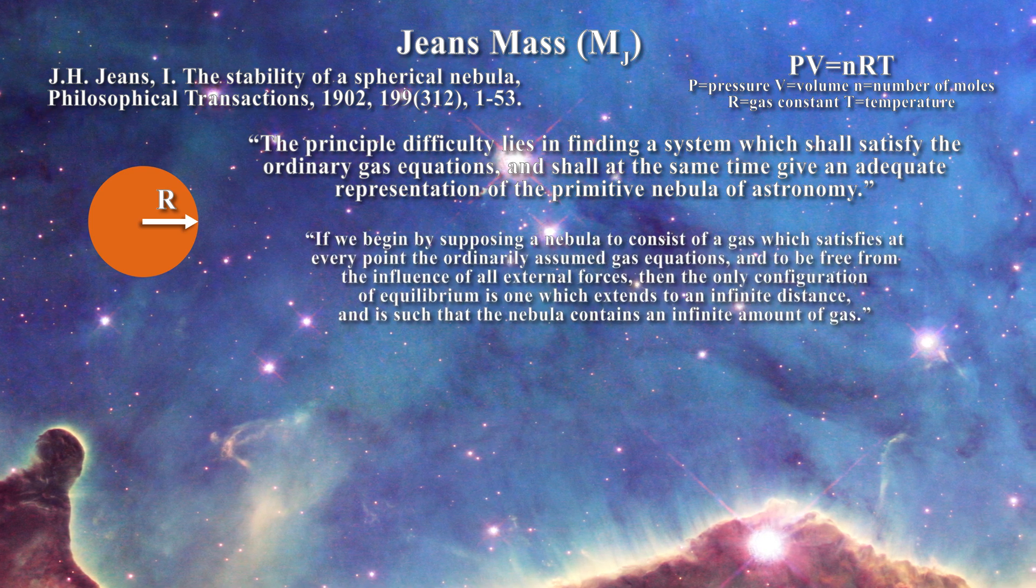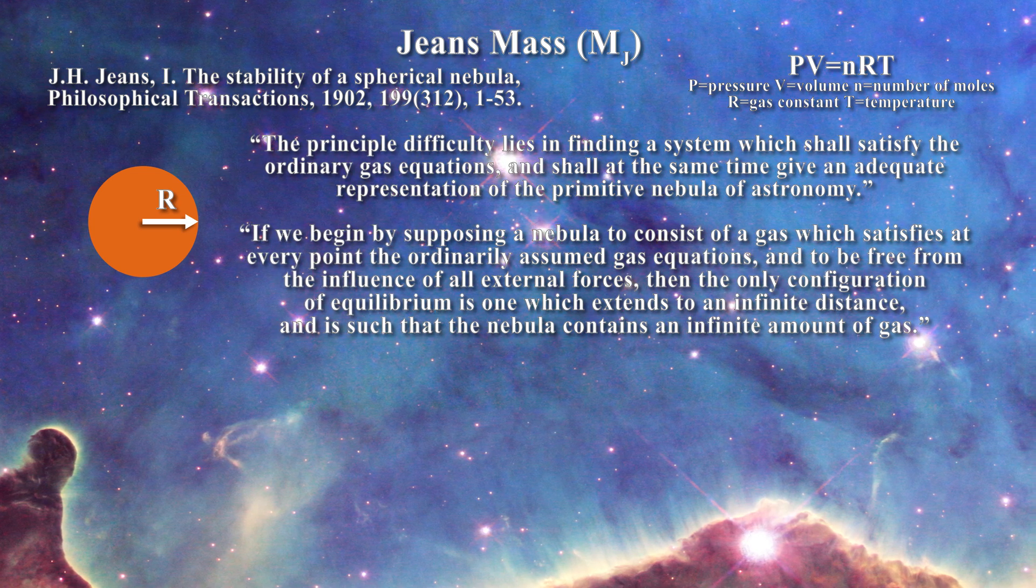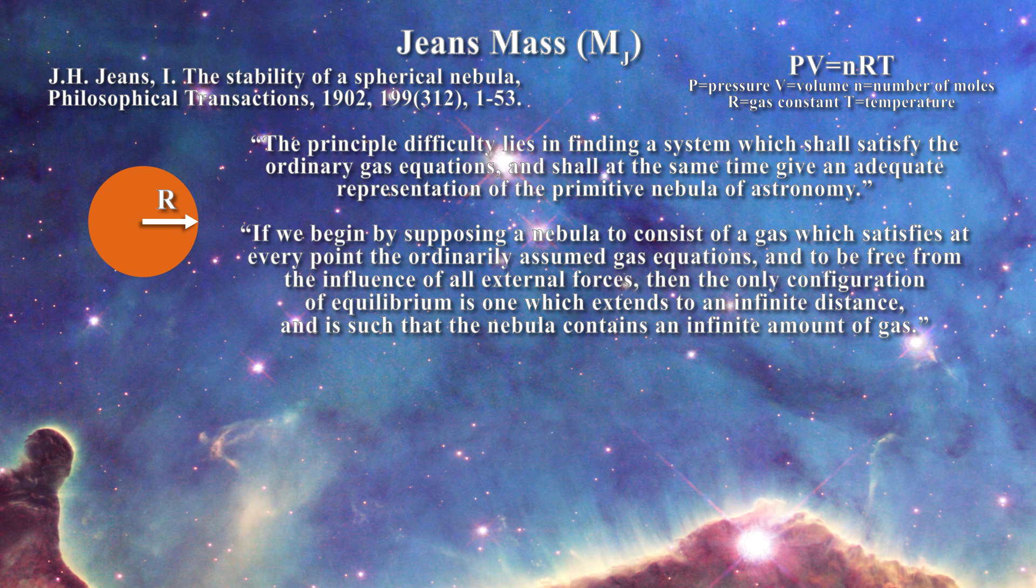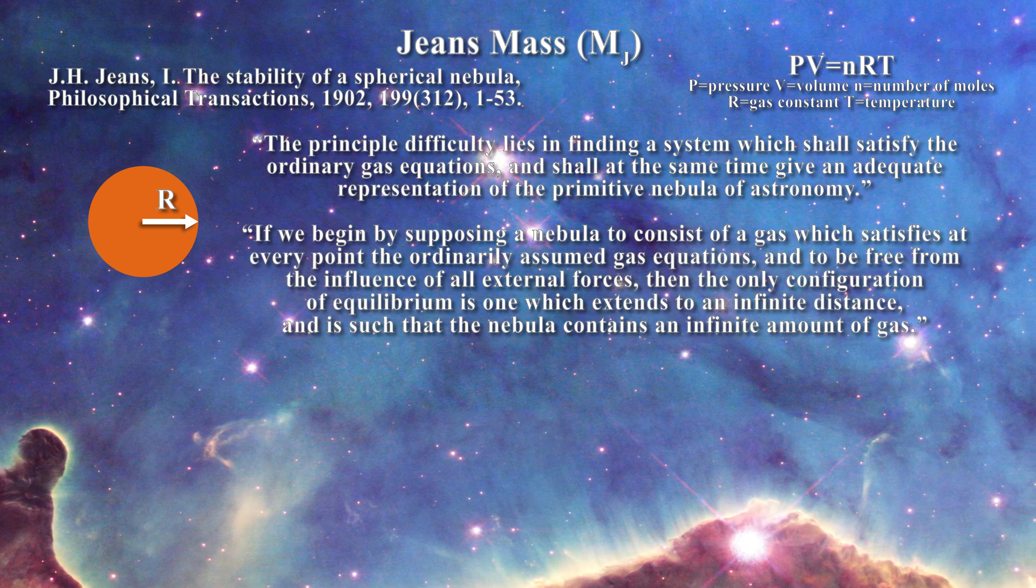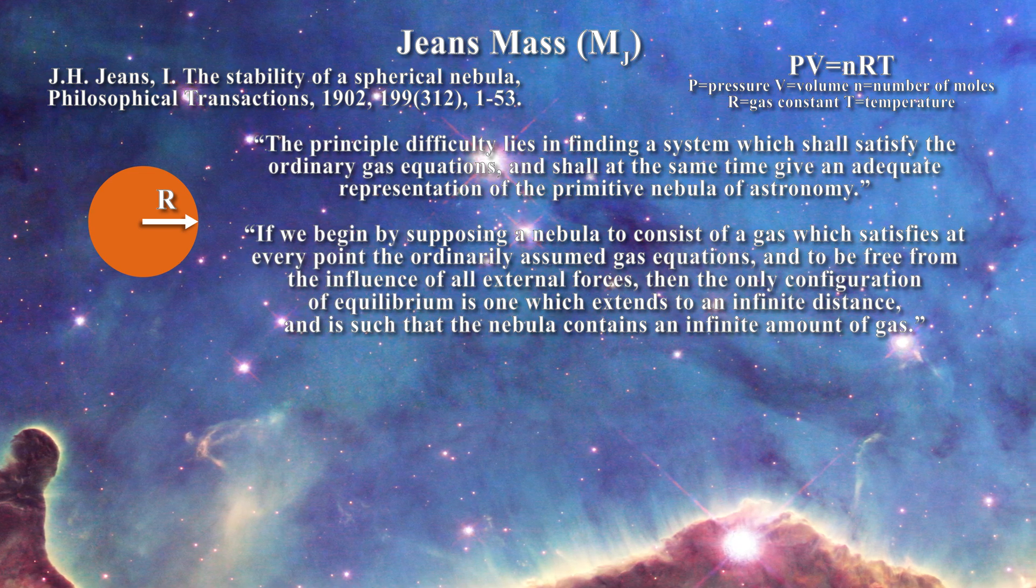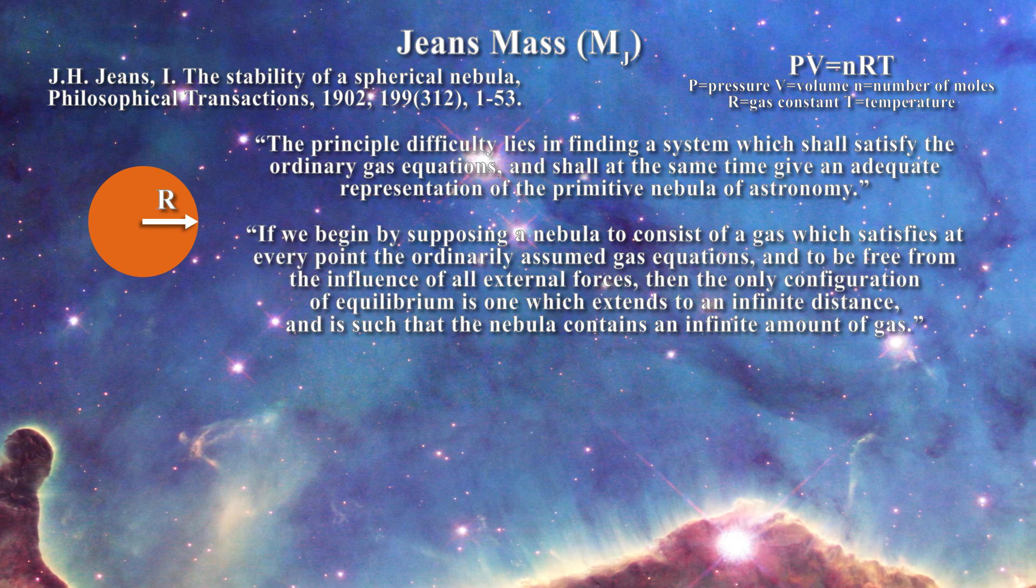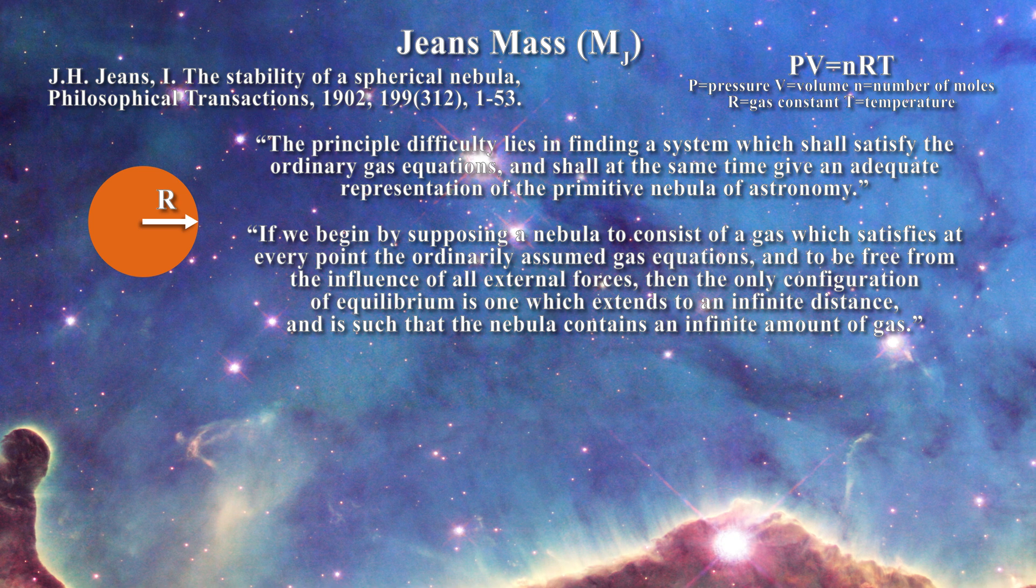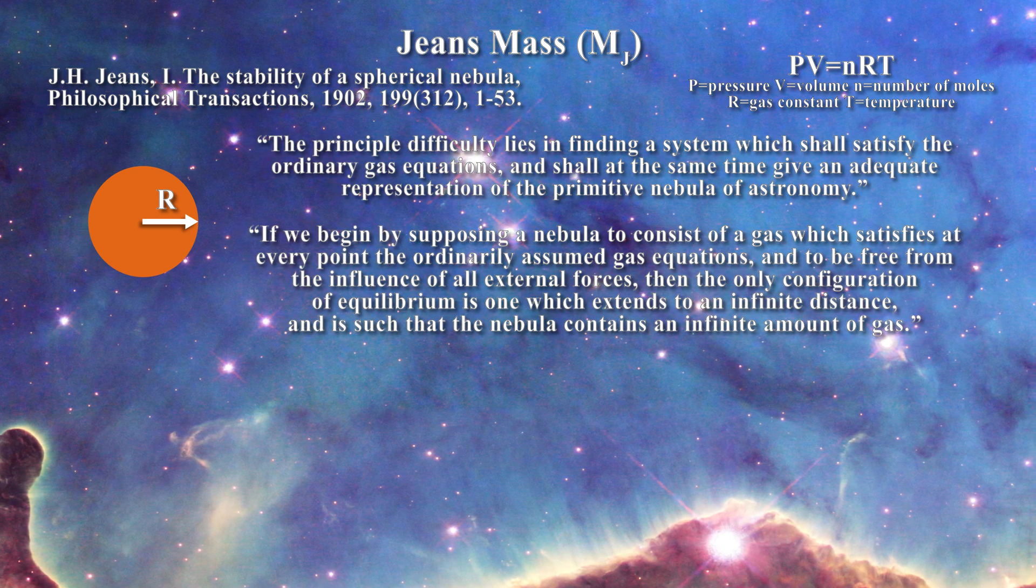Jeans continues: if we begin by supposing a nebula to consist of a gas which satisfies at every point the ordinary assumed gas equations and to be free from the influence of all external forces, then the only configuration of equilibrium is one which extends to an infinite distance and is such that the nebula contains an infinite amount of gas. With that simple sentence Jeans has just explained why the problem of the gaseous nebula collapsing on itself cannot be solved.